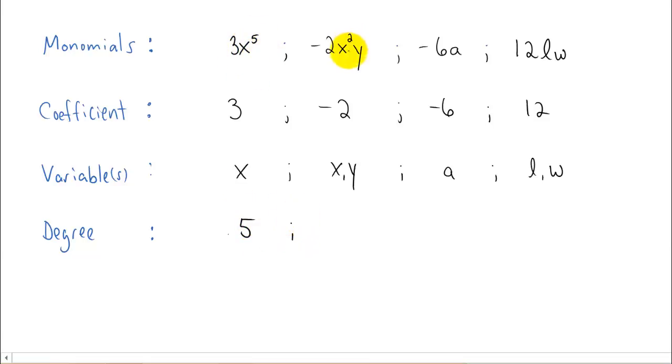In the next example though, we have x that's raised to a power of two. And we also have y that doesn't have a power on it. But secretly, we don't write it, but there's a power of one on that y. You sum those two powers together, and you get two plus one is three. So the degree of this term here, this monomial, is three.